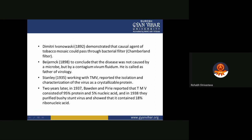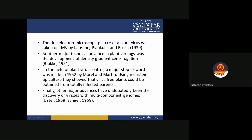In 1938, purified Bushy Stunt virus was shown to contain 88% RNA. The first electron microscope picture of a plant virus was taken of TMV by Bosch, Honkwish, and Aroska in 1939. Another major technical advance in plant virology was the development of density gradient centrifugation by Brick in 1951. In the field of plant virology control, a major step forward was made in 1952 by Norrell and Martin, who used meristem stem tip culture and showed that virus-free plants could be obtained from infected specimens.